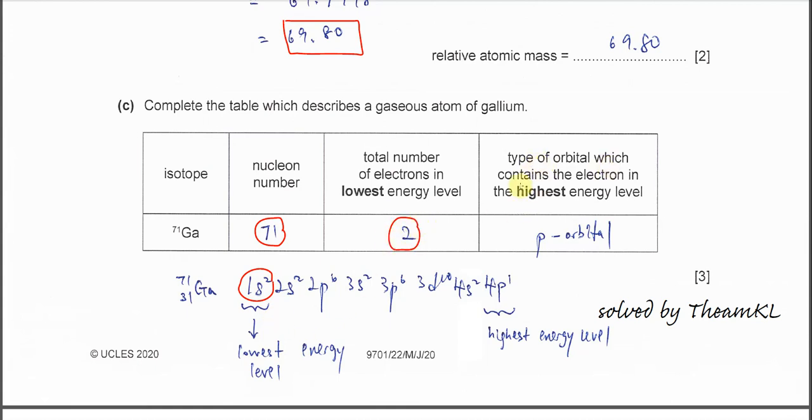And the type of orbital which contains the electrons in the highest energy level. The highest energy level, the type of orbital is always higher than the s orbital. So in the highest energy level, the type of orbital that you should choose is the P because P is higher than the s orbital.